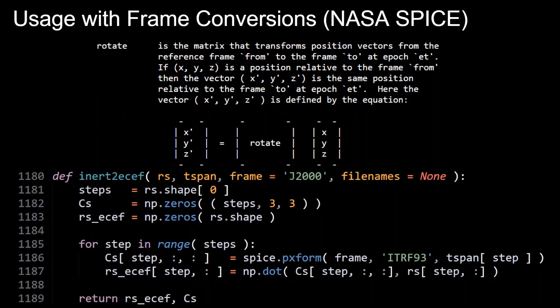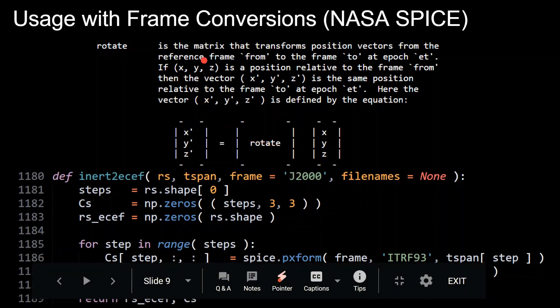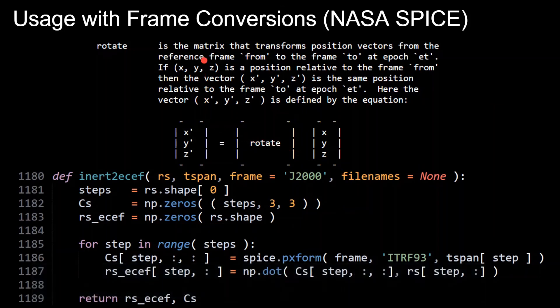So this slide just gives a sneak peek to how these reference frames rotations will be implemented into Python, specifically using NASA's SPICE software with the Python wrapper, spicy pie. And if this doesn't sound familiar, I'll have links in the description where I cover how to use the SPICE software in Python, and it's very easy and simple. And this code snippet here is converting from an inertial frame to an earth centered earth fixed frame, which is what I use in order to create the ground track plots, and again I'll have videos in the description for those too, if you're interested.